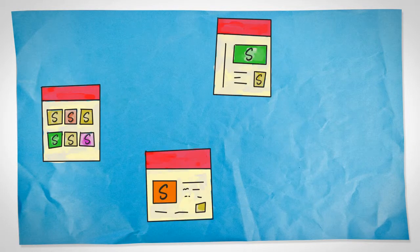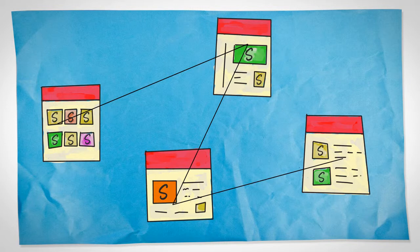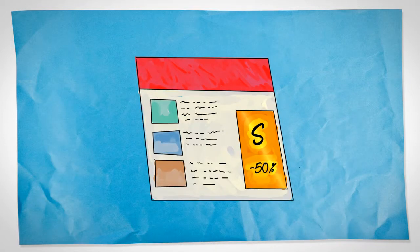For example, Visitor A browses multiple pages containing info on Product Group S. The OMC recognizes the path and makes sure that Visitor A's next visit begins well with a special offer on Product Group S.